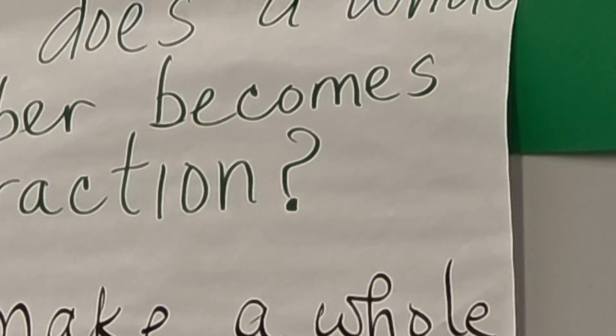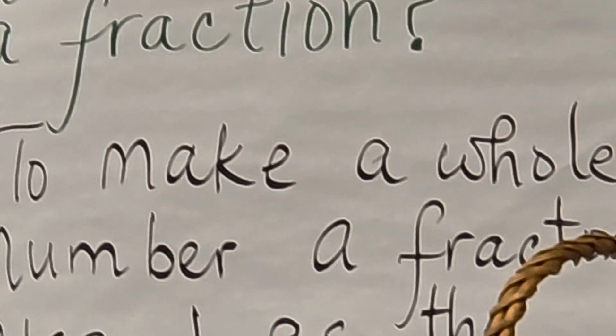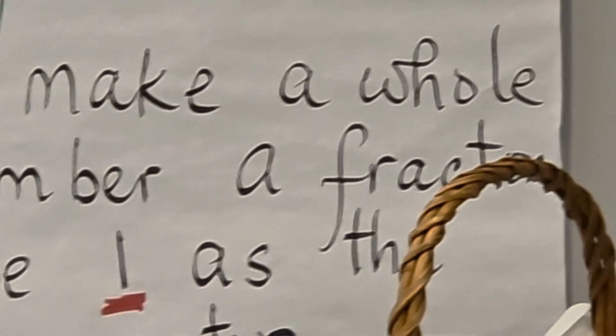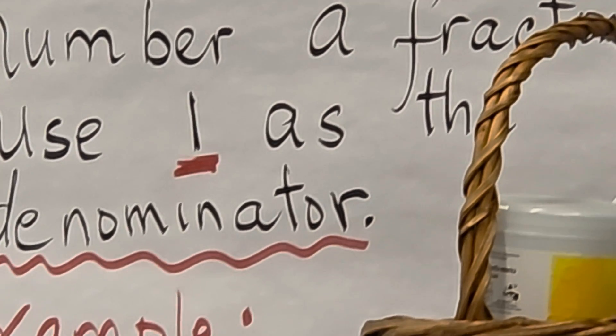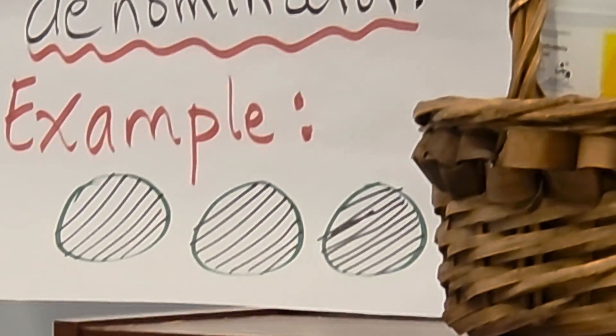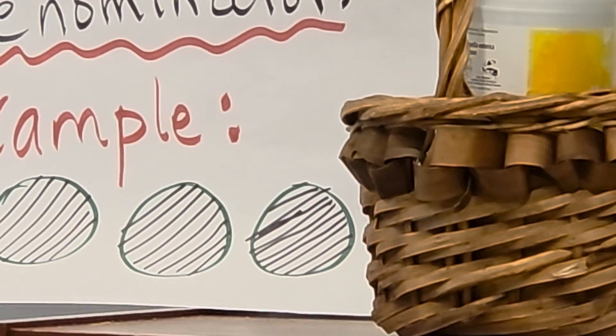All right guys, let's see how a whole number becomes a fraction. I tell them that you put the whole number over one, because one as a denominator doesn't change the value. A lot of them are putting — they have four whole pizzas but they're putting it over four. And I'm showing them, when you reduce it, you're only going to get one pizza. So in order to keep the value, in order to keep the whole number as a whole number, put it over one.